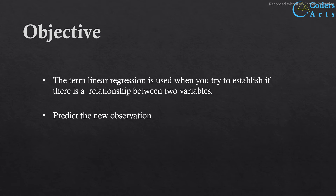Our second objective is to predict new observations. We can use what we know about the existing relationship to predict an unobserved value. For instance, if we know that our sales tend to grow over time, and we know how strong that relationship is — how fast sales grow — we could use this information to predict what our sales will be in the next quarter.